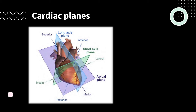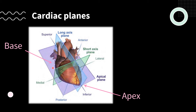Here's an image of the heart as it lies in the body. Notice that it doesn't fit in the typical sagittal, coronal, or axial planes — it has its own set of orthogonal planes. First, we'll talk about the long axis plane, which goes along the long axis of the heart. Orthogonal to that is the short axis plane, and then the apical plane shooting back up. The apex of the heart is at the most inferior portion, while the base is at the superior cranial part.